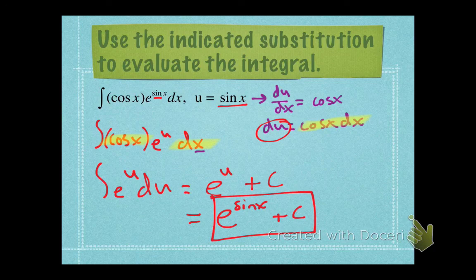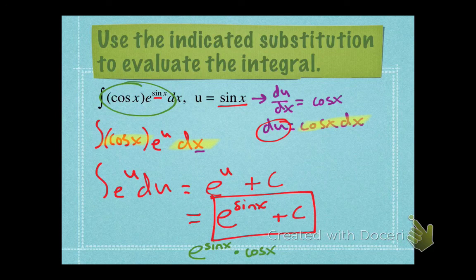Let's check our answer. If we take the derivative of our final answer, we should get what we started with: cosine x times e to the power of sine x. The derivative of e to the power of sine x would be e to the power of sine x, and then by the chain rule we multiply by the derivative of the exponent. We do end up with that integrand, which tells us we've done this correctly. That's u-substitution for evaluating indefinite integrals.